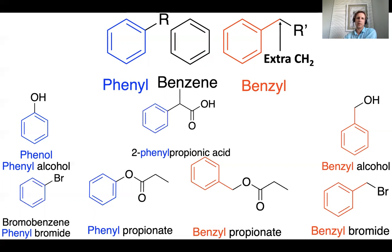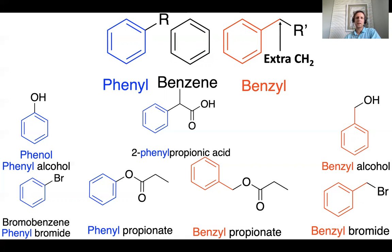Finally, thinking about aromatic rings as substituents on larger molecules: if we have a benzene ring — the phenyl group — in the two position of propionic acid, the IUPAC name for that molecule would be 2-phenylpropionic acid. We label the substituent benzene ring as phenyl and indicate it's in the two position. Notice that in this case the benzene ring is directly integrated into the three-carbon propionic acid chain. I hope that was helpful — thanks a lot.